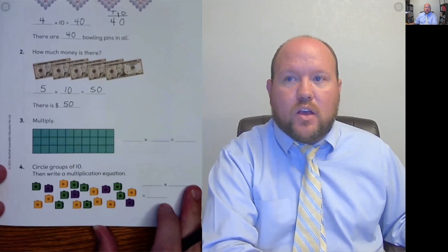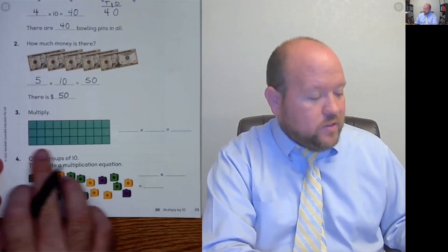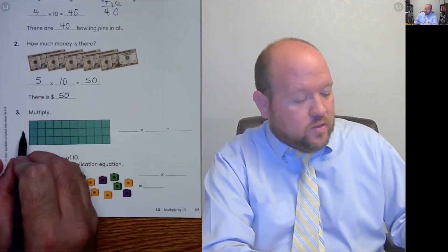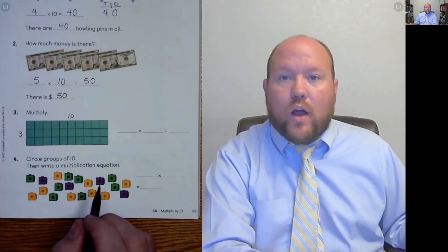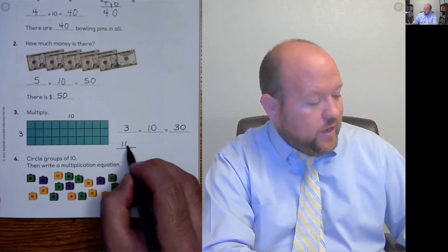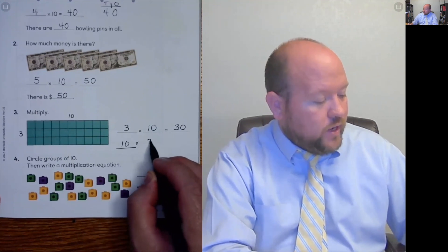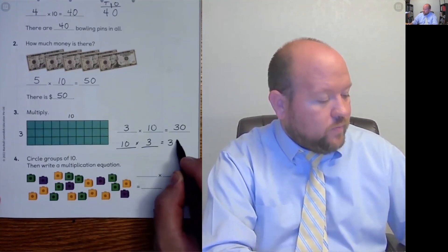Next one. Multiply. So we have this array. 3 on this side, 10 on this side. So one way you could have answered this is to go 3 times 10 equals 30. Or you could have written 10 times 3 equals 30. Either one of those numbers would have been fine.